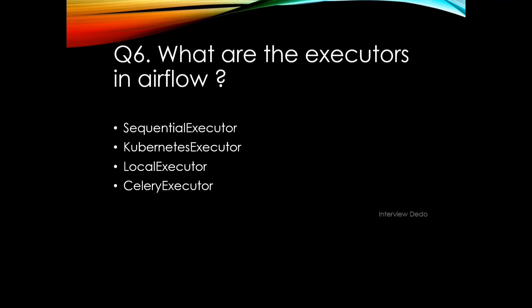There are pros and cons to each executor. The sequential executor is not scalable — it's good for simple and straightforward setups only and not suitable for production. The local executor can perform multiple tasks at a time but is not suitable for production as it's intended for development stages. The Celery executor is scalable and handles workers, but it needs RabbitMQ or Redis to queue tasks, making the setup complicated. The Kubernetes executor offers the advantages of both local and Celery executors — combining simplicity and scalability — but it has complex documentation and a complicated setup that requires gradual learning.